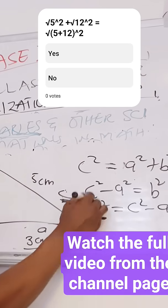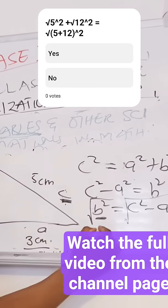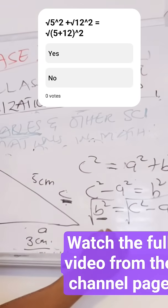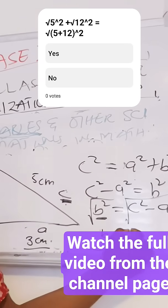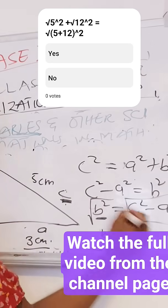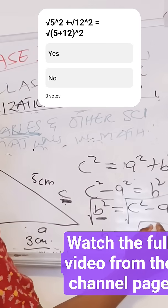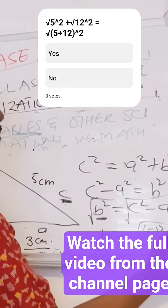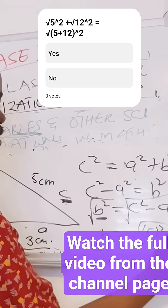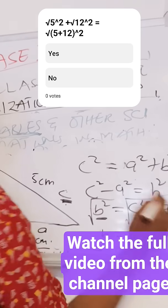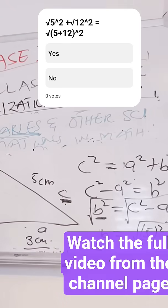So we use square roots to do that, and we're going to get b is equal to the square root of 5 squared minus 3 squared. So this is what happens.